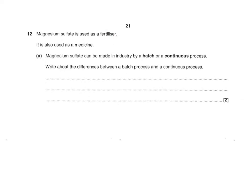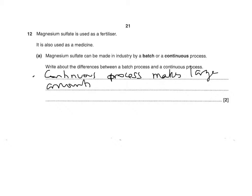Magnesium sulfate is used as a fertiliser and also as a medicine. It can be made in industry by a batch or a continuous process. Write about the differences. A continuous process works 24/7 and makes large amounts. A batch process makes small amounts. You get a mark for either of those points.